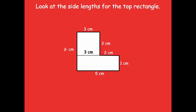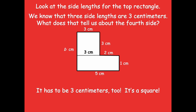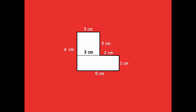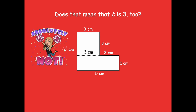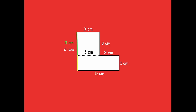Now look at the side lengths for the top rectangle. We know that three of the side lengths are three centimeters. Since it's a square, all side lengths are equal, so the fourth side is three centimeters too. But does that mean B is just three centimeters? Absolutely not — we have to add on the side length from the bottom rectangle to find the total length of B. The blue part is three centimeters, but we still need to find the yellow part.